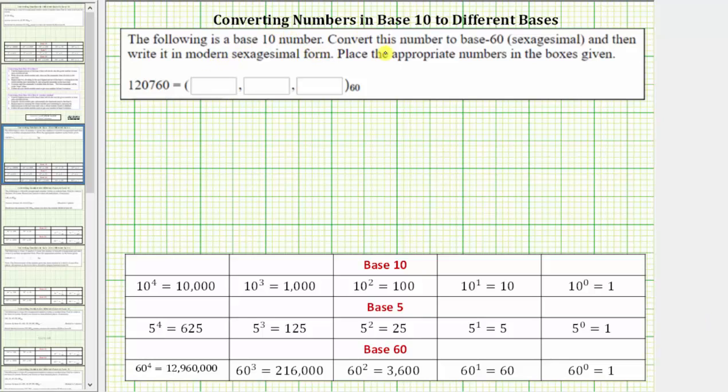The following number is a base 10 number. Convert this number to base 60, and then write it in modern sexagesimal form. Place the appropriate numbers in the boxes below. We are given 120,760 base 10, and asked to write this in base 60.